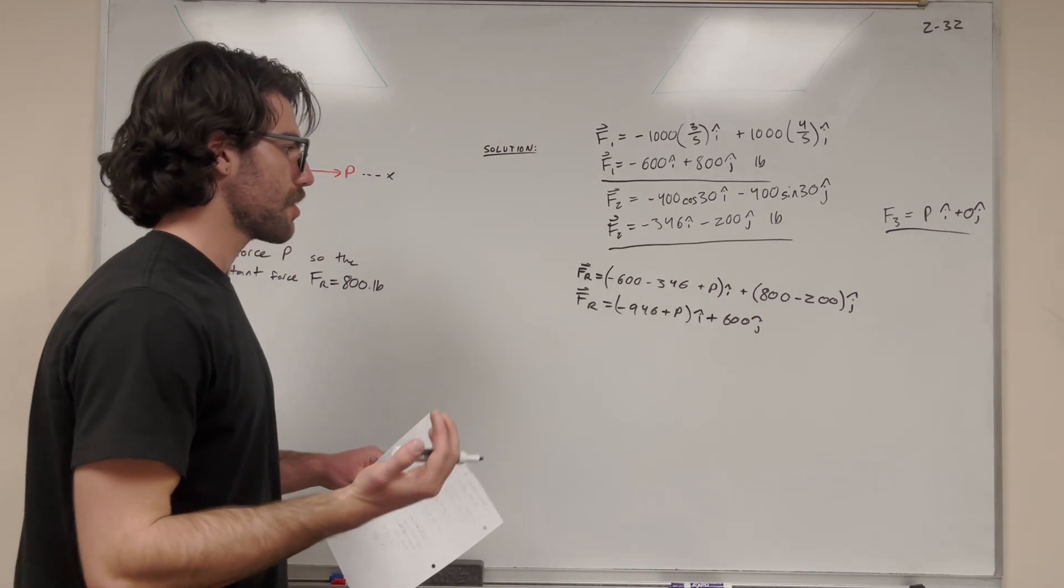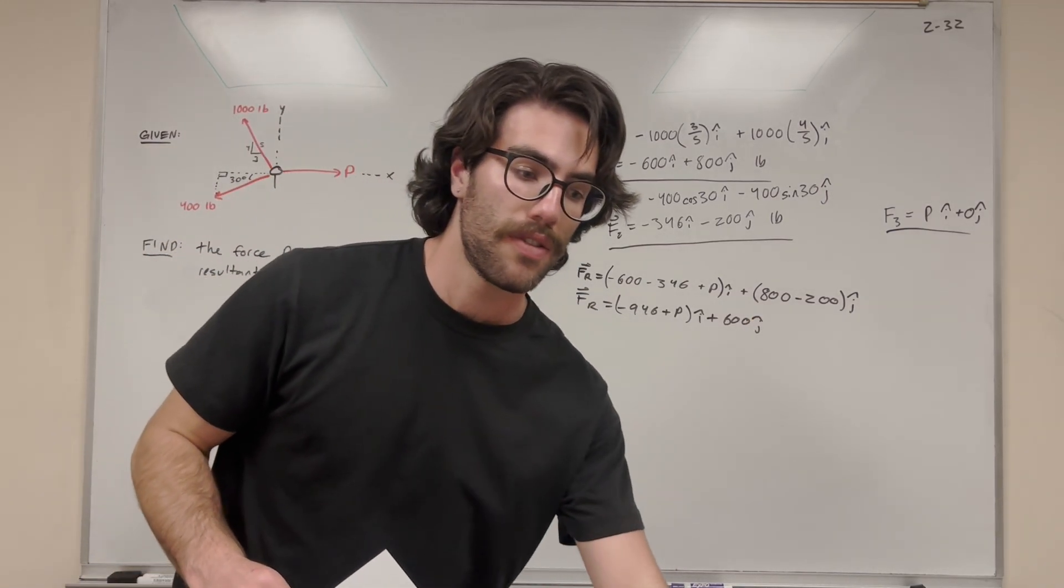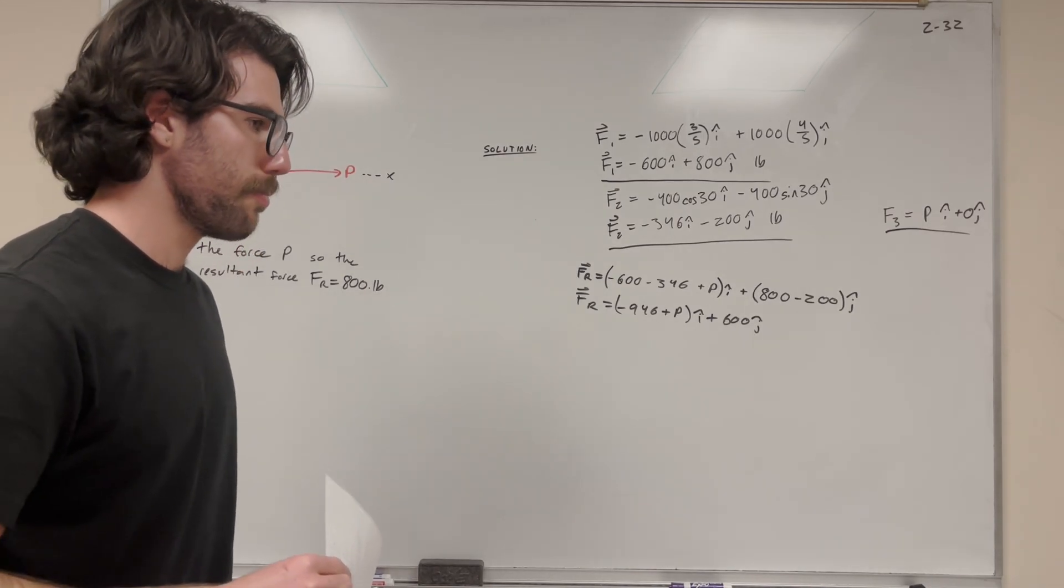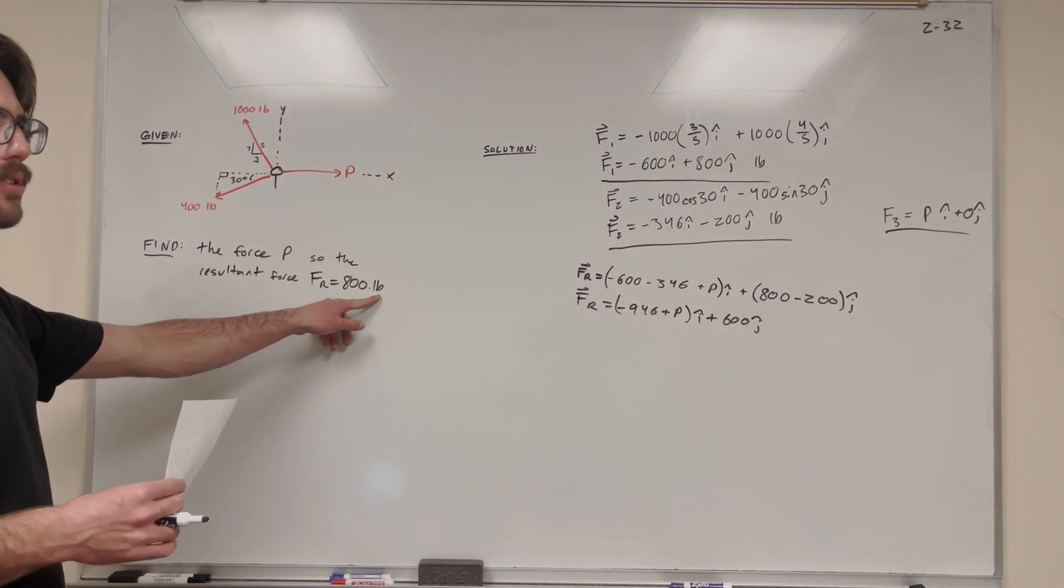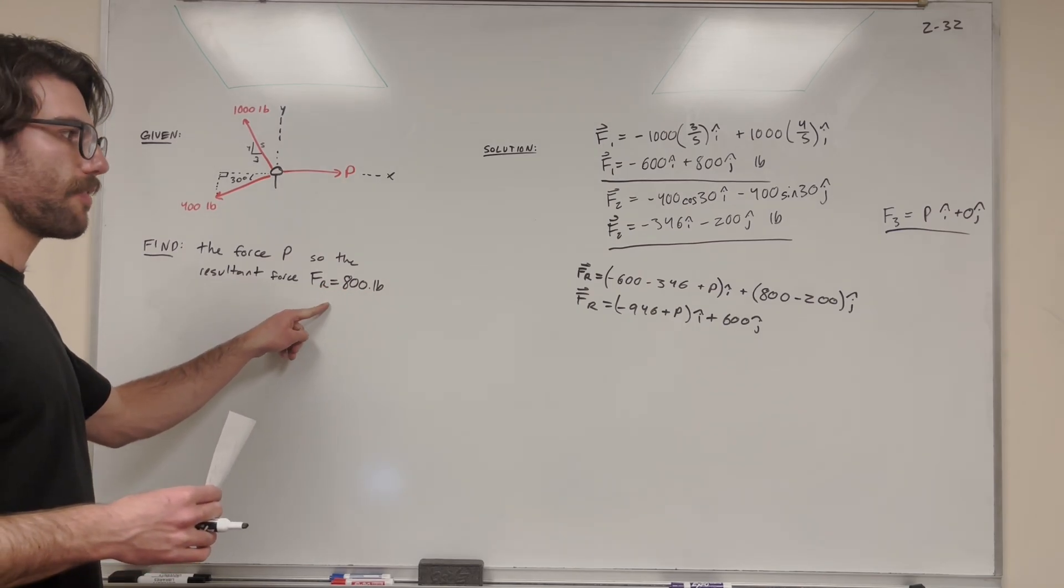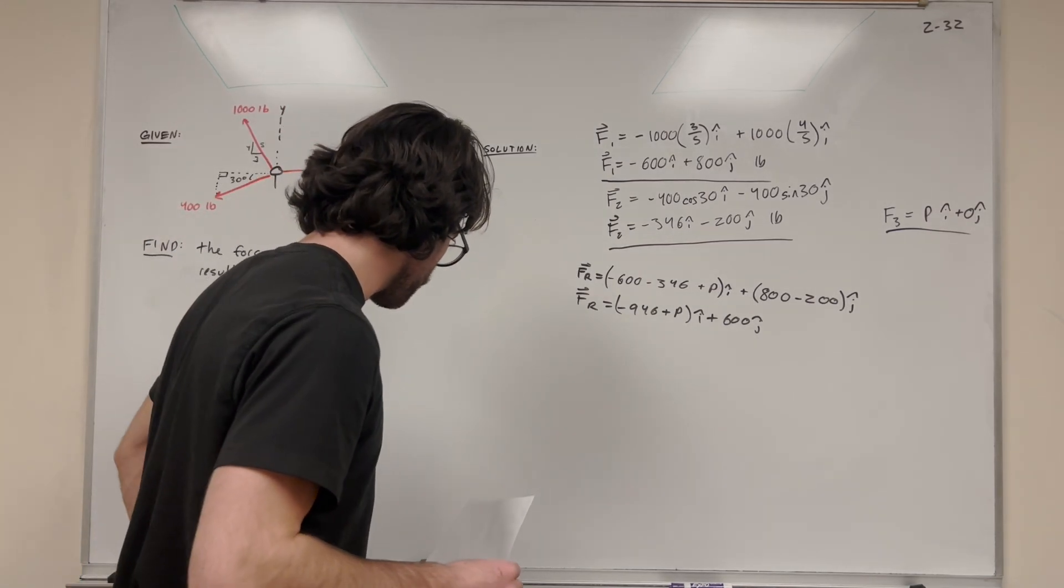This is our resultant in vector form, but we want to find it in magnitude form, because we're looking for the resultant force magnitude equal to 800 pounds. This is giving us magnitude, not a vector. So we need to find the magnitude of this.